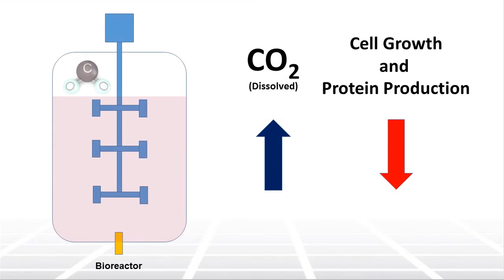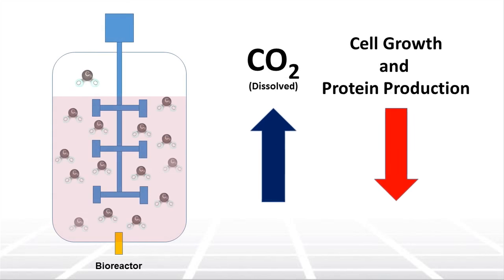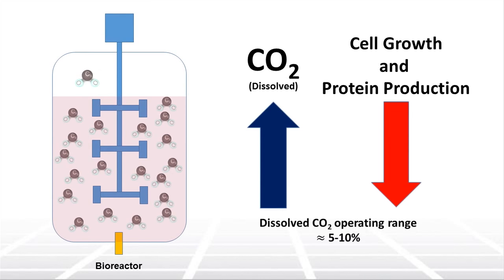Likewise, dissolved CO2 levels rising above 20% will cause detrimental effects to cell growth and protein production. Therefore, a typical working range is between 5-10% dissolved CO2.